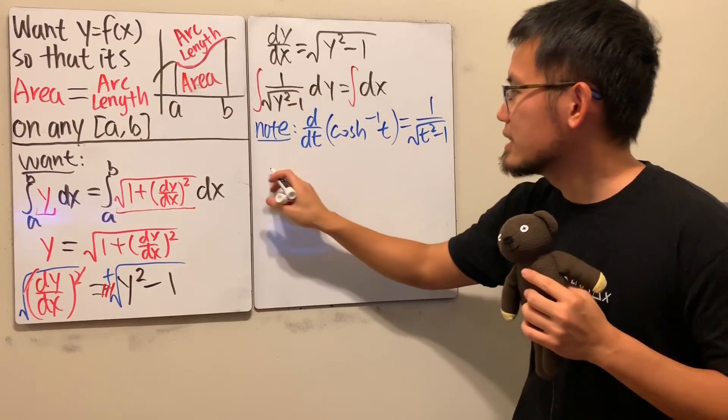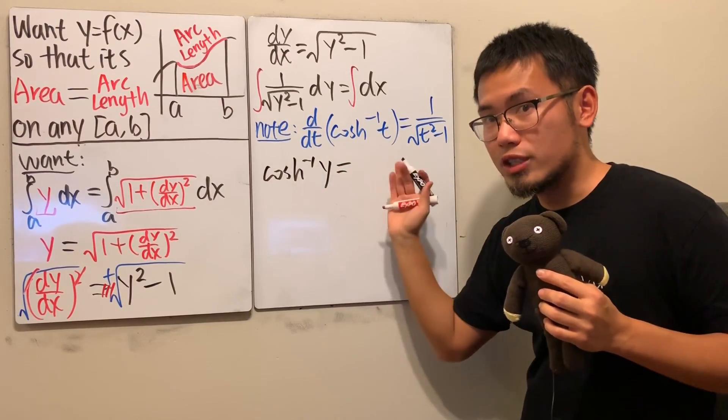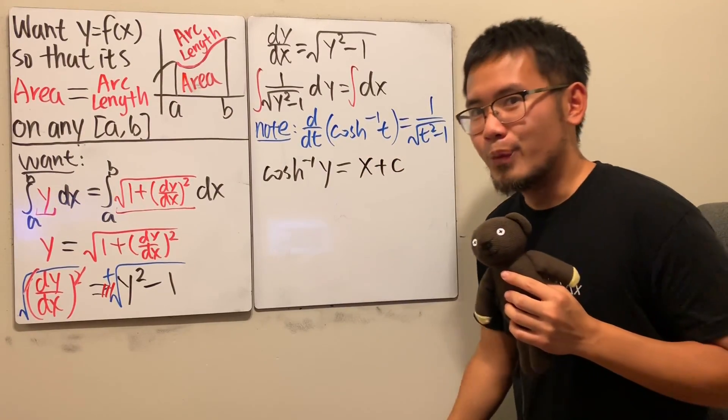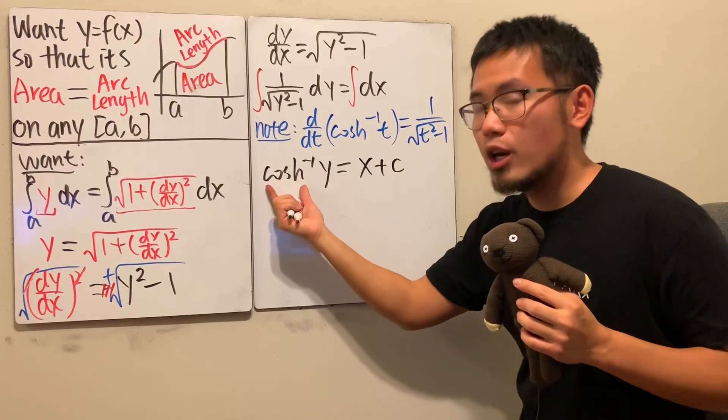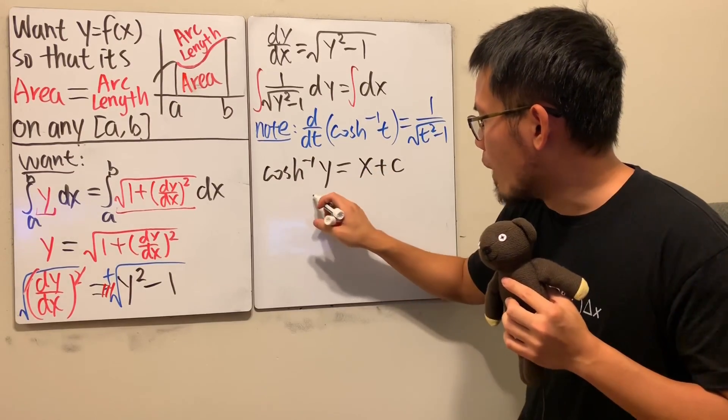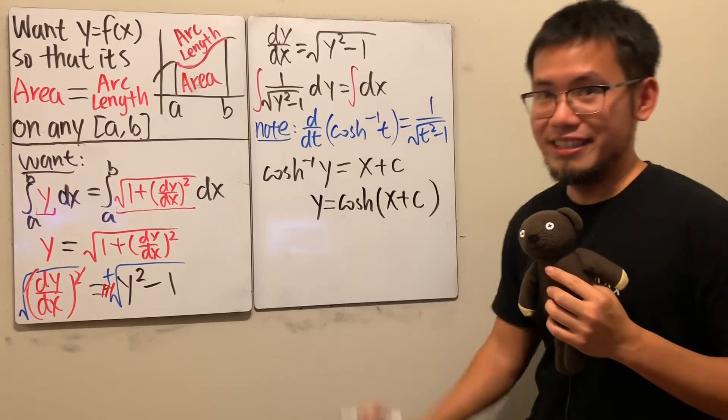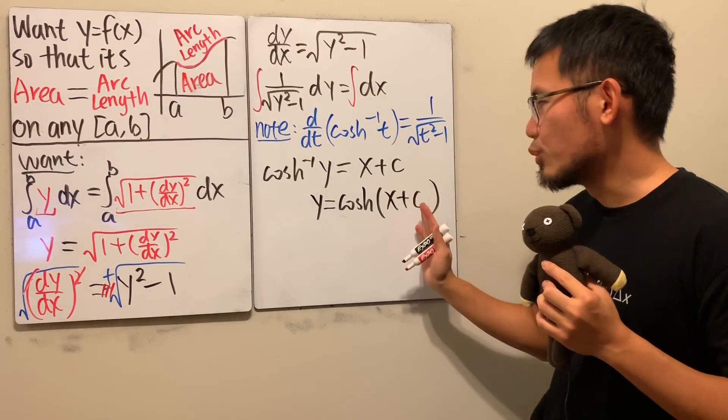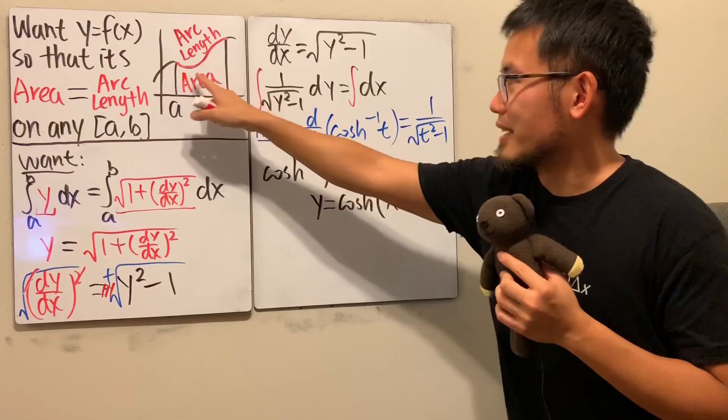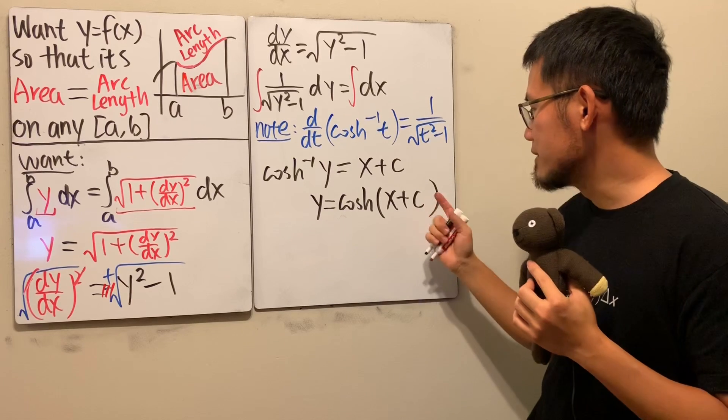This will give us inverse cosh of y, and don't worry about the plus c, you can just put on the plus c on the right hand side. Integrating dx you just get x but don't forget the plus c now. Well if you want to figure out the function you can just take the original cosine with h on both sides, namely cosh, so you get y is equal to cosh of x plus c like this. And in fact you can pick whatever c that you want because this is actually just going to be a horizontal shift. And I know cosh does not look like this but that was just a random picture right, but have a look right here on the screen, take a look if you have c is equal to 0.